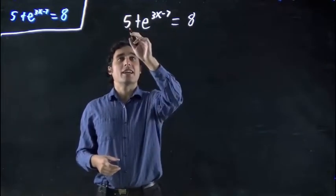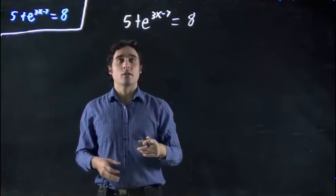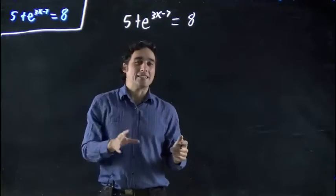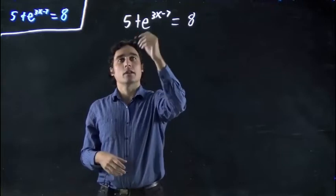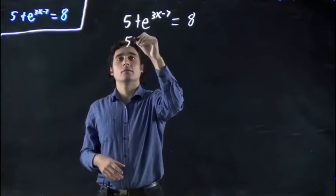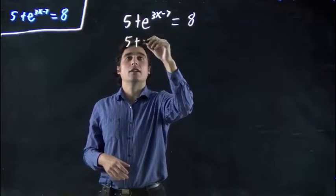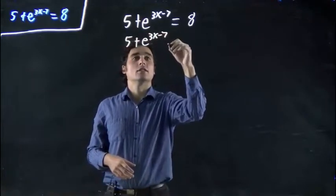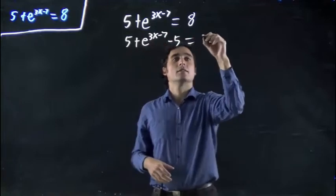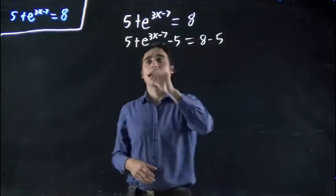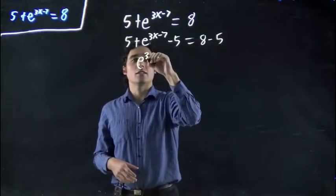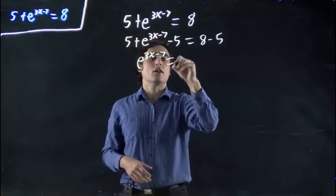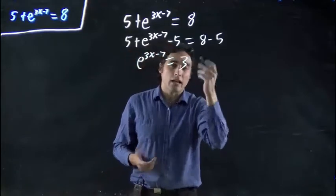So first we want to take this 5 and get it to the other side. We want to just have one term on each side. So in that case what do we have to do? We have to subtract 5, because we have a plus 5 on the left hand side that we want to get rid of. So we minus 5 from both sides. And we just end up with e to the 3x minus 7 all equals 3, 8 minus 5.